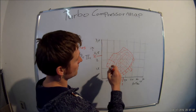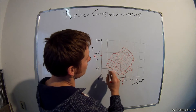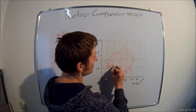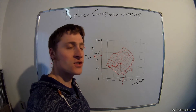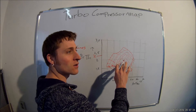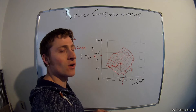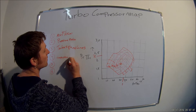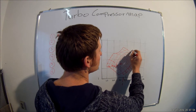Then we have the other vertical lines in the compressor, these lines going in here. You can mostly see them ranging from about 70 to 76 or 78 percent. These are the efficiency of the compressor — how efficiently the compressor is running. The more efficient the compressor is running, the less energy you have to put in to reach a certain amount of air flow. That's compressor efficiency, number four.